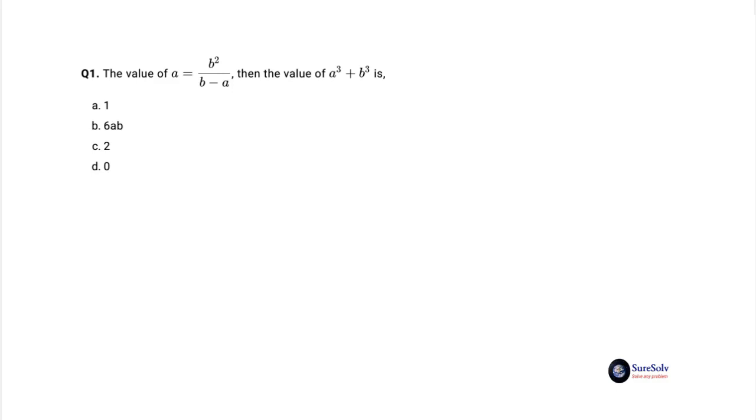To get a simple value of a cubed plus b cubed as in the choices, most likely we would get the given expression as a factor in the two-factor expansion of a cubed plus b cubed. Let's first write the expansion of a cubed plus b cubed. a cubed plus b cubed equals a plus b multiplied by a square plus b square minus ab.